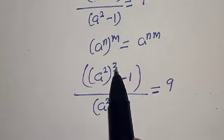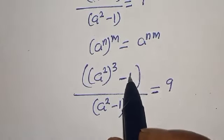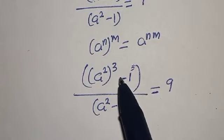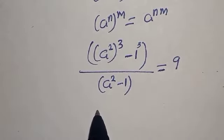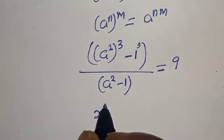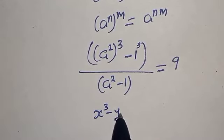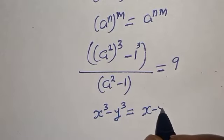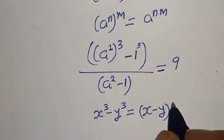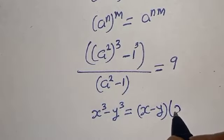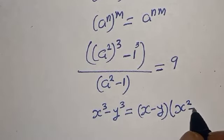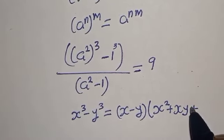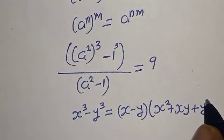Here the numerator is to the power of 3, and 1 is also raised to power 3 since 1 raised to power 3 is 1. Remember this rule: if you have x raised to power 3 minus y raised to power 3, this equals x minus y, times the bracket x squared plus xy plus y squared.